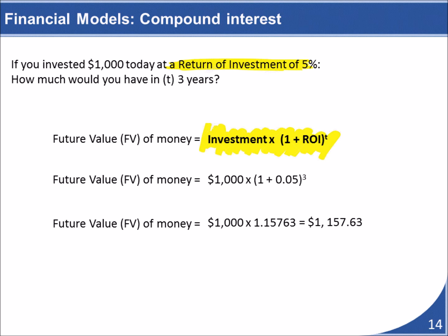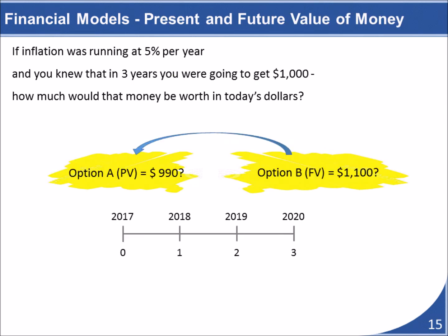The compound interest formula is a little different but not too much. The calculations for the same $1,000 over the three-year period using compound interest show that we earned $57.63 more than we would have earned with simple interest. Both simple and compound interest allow us to determine the future value of money that we invest today.